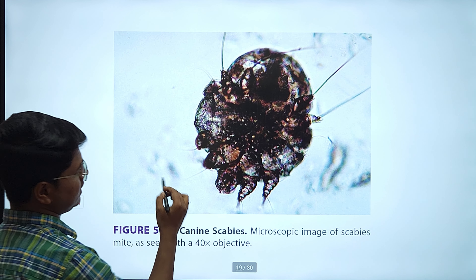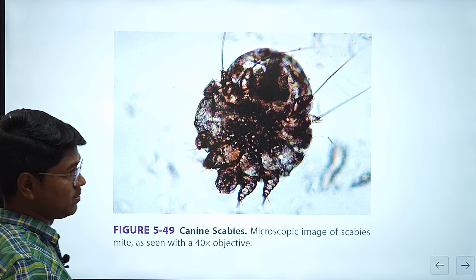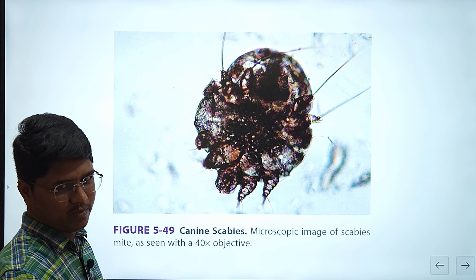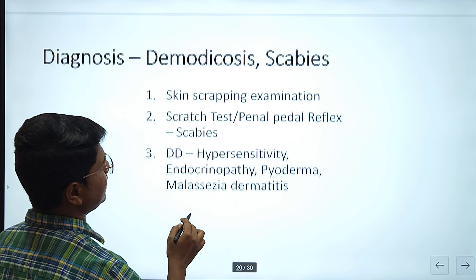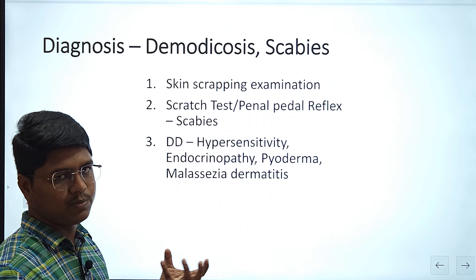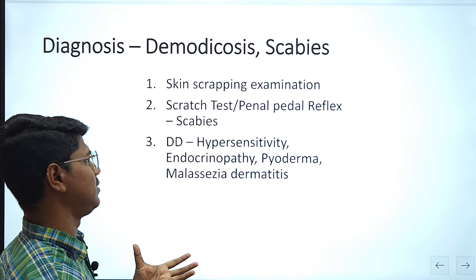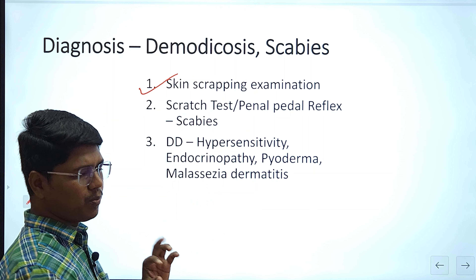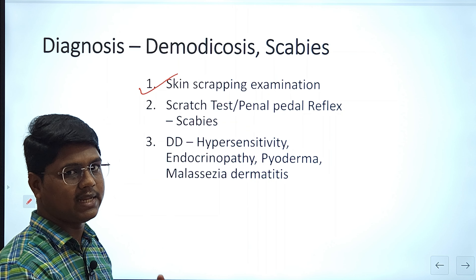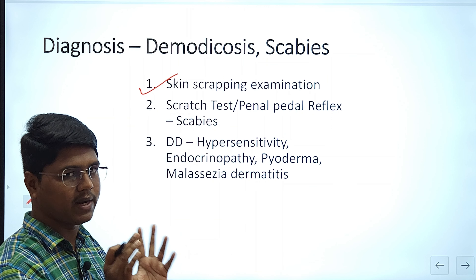This is the sarcoptic mite, easily visible under 40X. You have to search for the mites under the 40X objective. Remember, even with deep skin scraping it is still difficult to find them. Demodex is comparatively easy to find, but sarcoptic mites are very difficult. So if your pinnae are affected, first suspect scabies. Take samples from different parts of the body — if you have 4 to 5 lesions, take samples from each and you may find the sarcoptic mite.